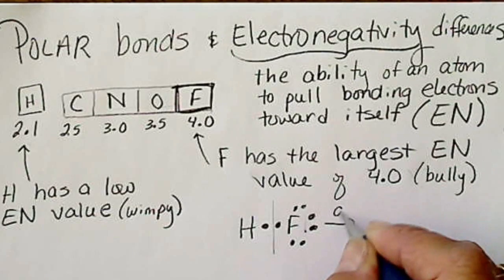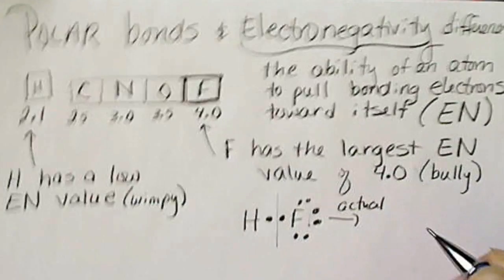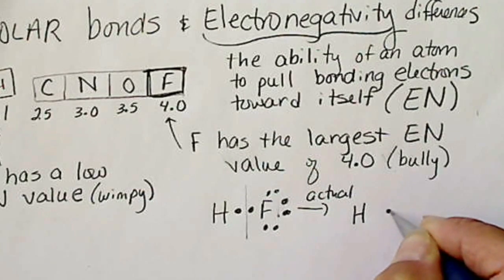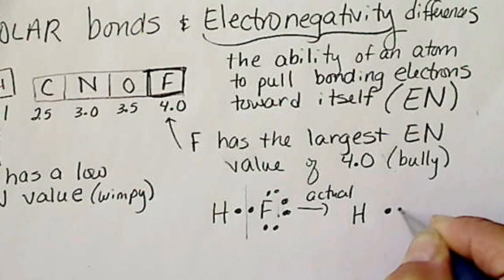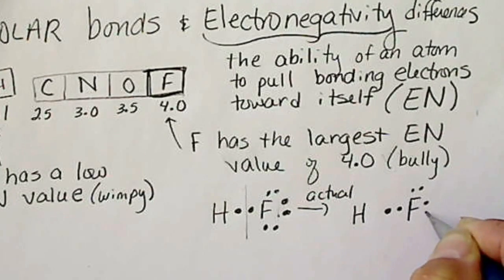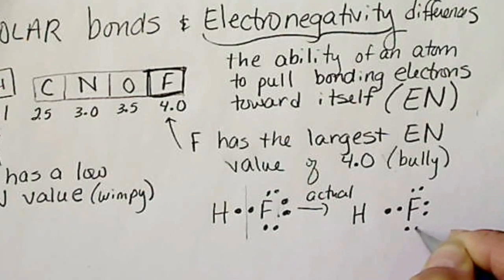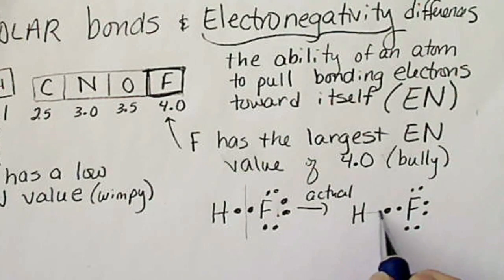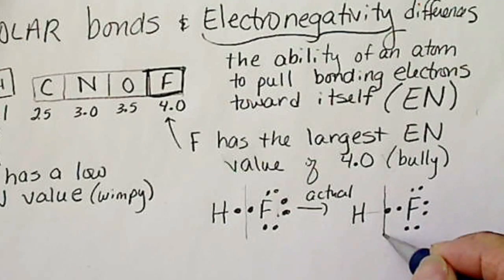Hydrogen's electron is pulled much closer to fluorine because fluorine would like to be a negative one. And if it can't steal an electron to be a negative one, it's going to act like a bully and pull hydrogen's electron toward itself.